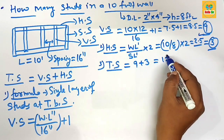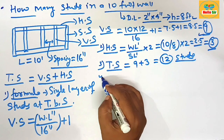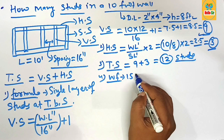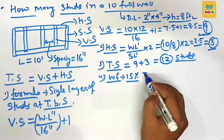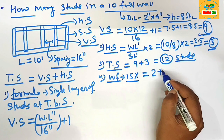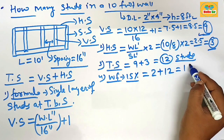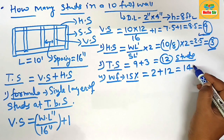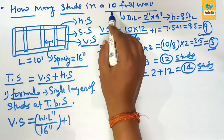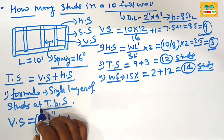The total studs needed are approximately 9 vertical plus 3 horizontal, which equals 12 studs. Adding a waste factor of 15 percent: 15 percent of 12 is about 2 studs. So including the waste factor, you need a total of 14 studs in a 10-foot wall with single layers of studs at the top, bottom, and side wall.